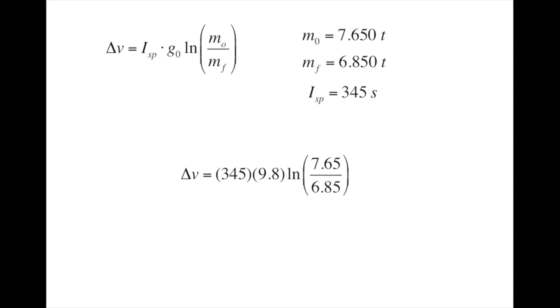Putting the numbers into the formula and pushing them through a calculator gets 373 meters per second for the vessel's available delta V. And that's it!